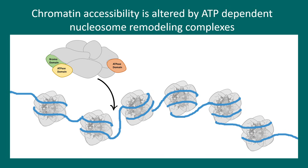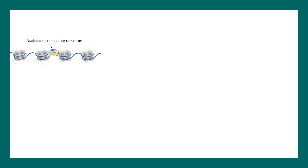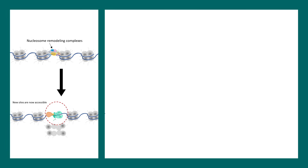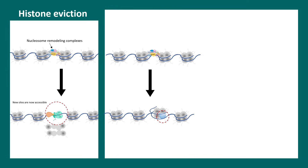These large complexes work on the basis of ATP, and they can bind to specific acetylated residues via bromodomains or methylated residues via chromodomains. Once they interact with the chromatin, nucleosome remodeling complexes can free up or evict histones from a nucleosome — this is known as histone eviction. Histone eviction leads to accessibility of new sites in the DNA where RNA polymerase or transcription factors can bind.